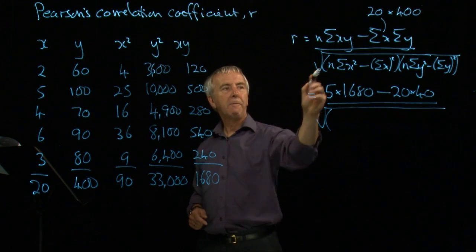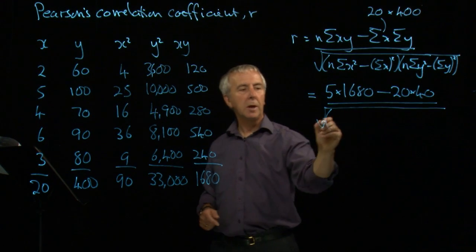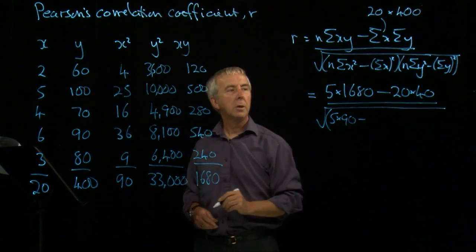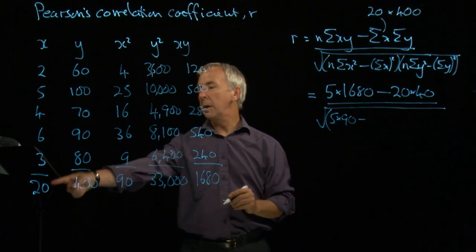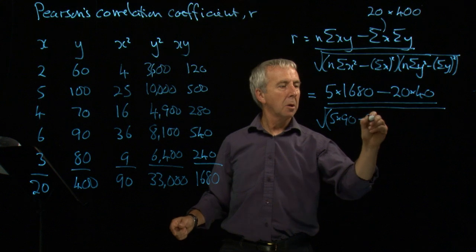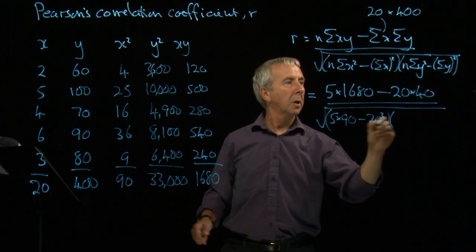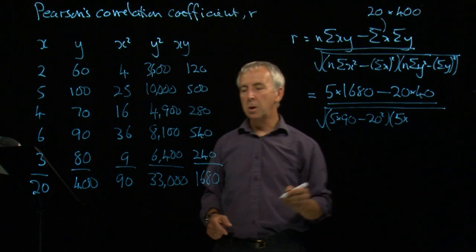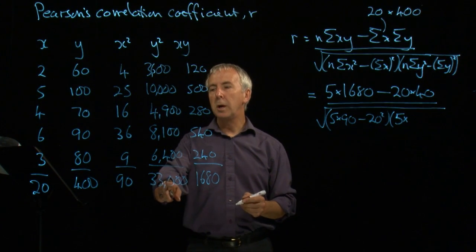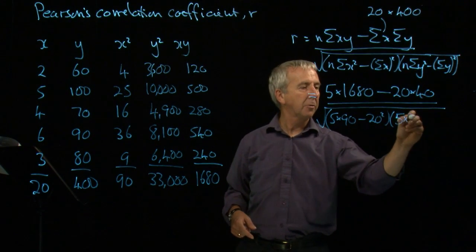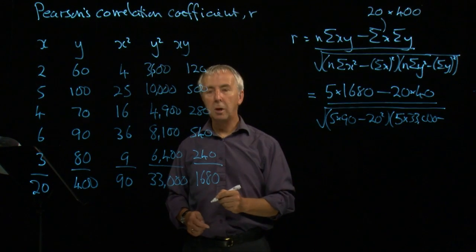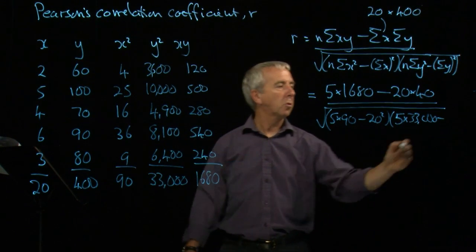Underneath, we have 5 times sigma x squared, 5 times 90, take away sigma x, which is 20, squared. And then the same for y, 5 times sigma y squared, which is 33,000, take away sigma y, 400 squared.